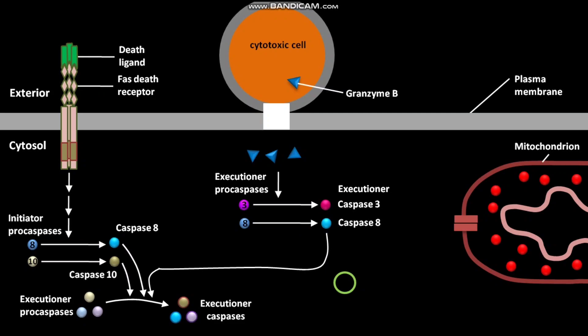Other active executioner caspases stimulate cytosolic inactive protein Bid. The inactive Bid is then cleaved and converted into active t-Bid or truncated Bid. Caspase-3 also causes cleavage and conversion of inactive Bid into t-Bid. Bid is a BCL-2 related protein.